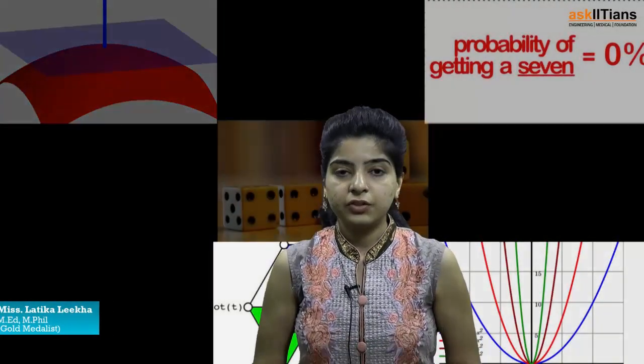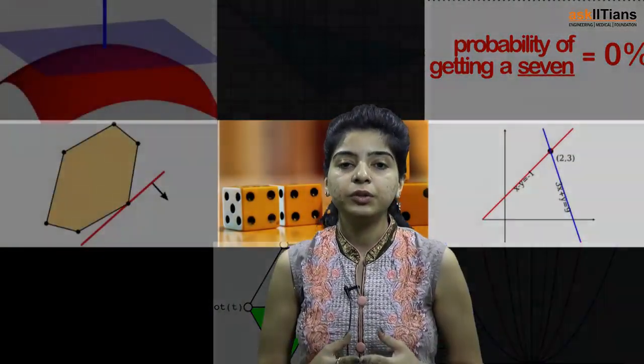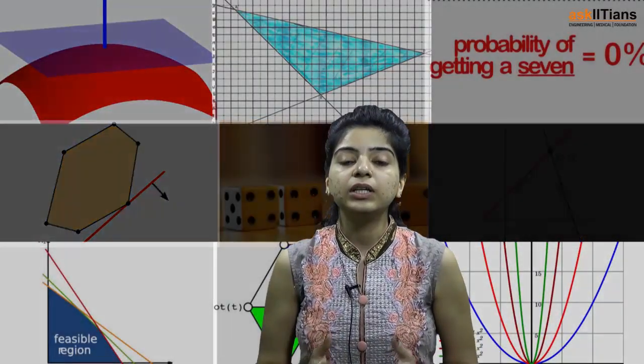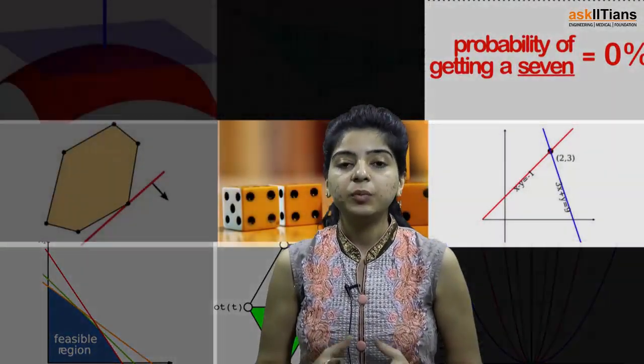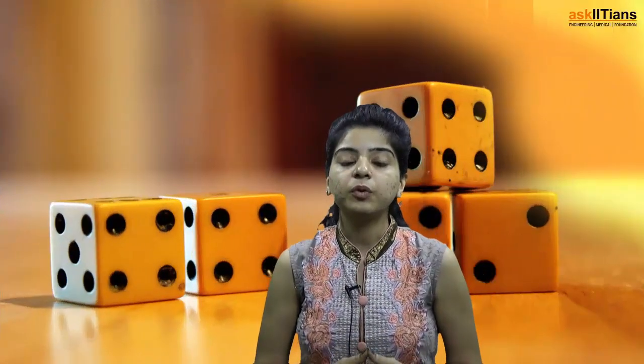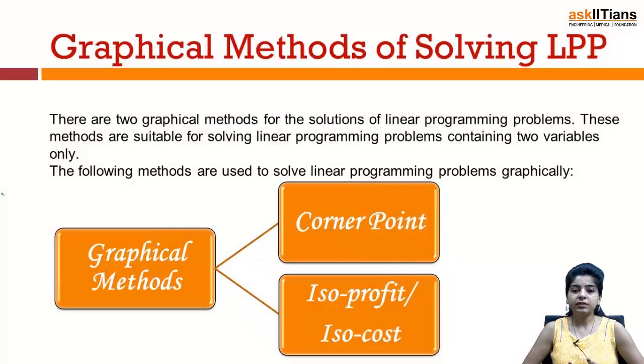Hello students, welcome back. This section is extremely important — we are going to discuss the graphical methods of solving an LPP, that is a linear programming problem. There are two graphical methods: the corner point method and the isoprofit/isocost method. In this section, our focus would be on the corner point method, in which we shall first discuss its algorithm and then various examples based on its application.